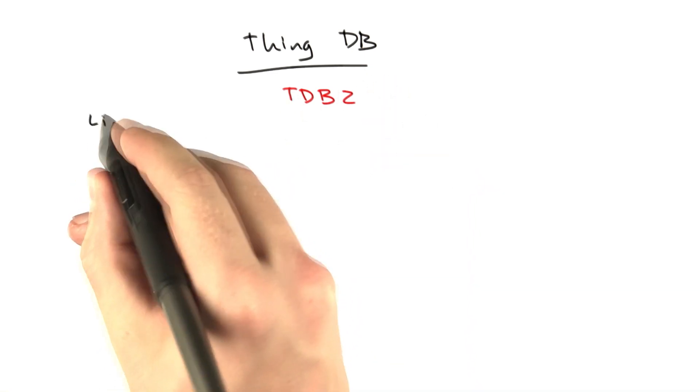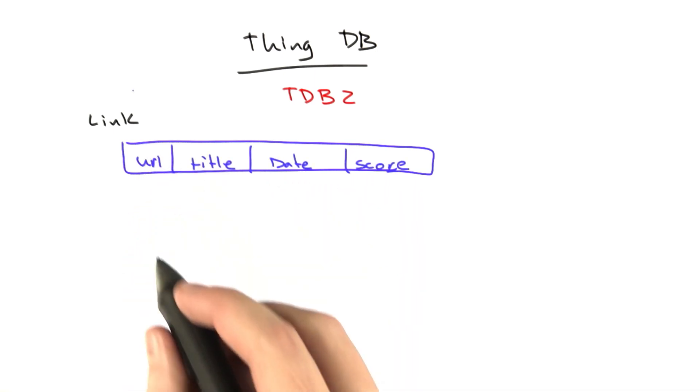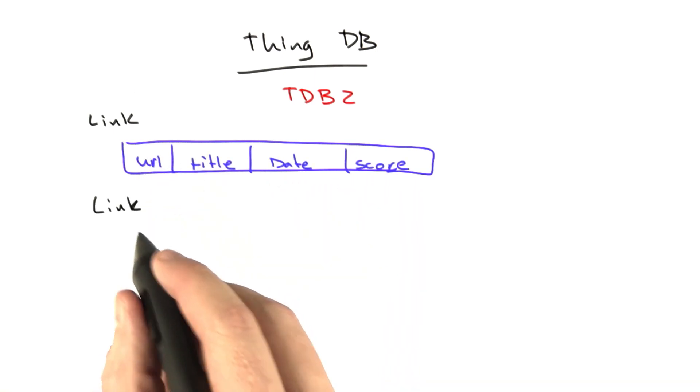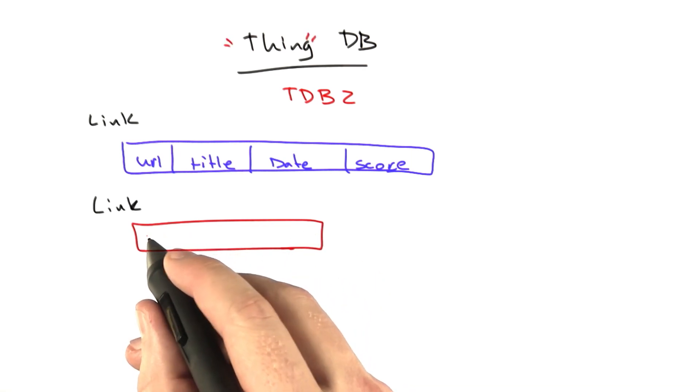Instead of having a table that looked like this, a link table with a bunch of different columns on it for different things, we would instead do something like this. We'd have a table that just had a couple properties on it, and a couple properties that everything had.